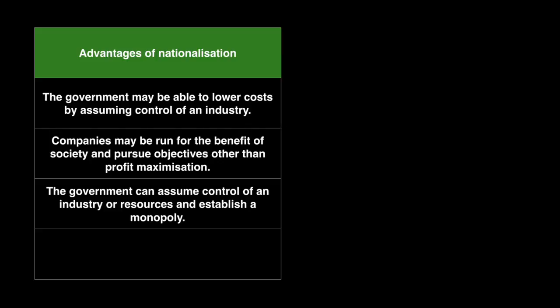Thirdly, the government can assume control of key resources and industries of a country. In China, the government exerts control over the largest banks in the country. However, this allows them to manipulate the financial sector in a way that could benefit the economy.